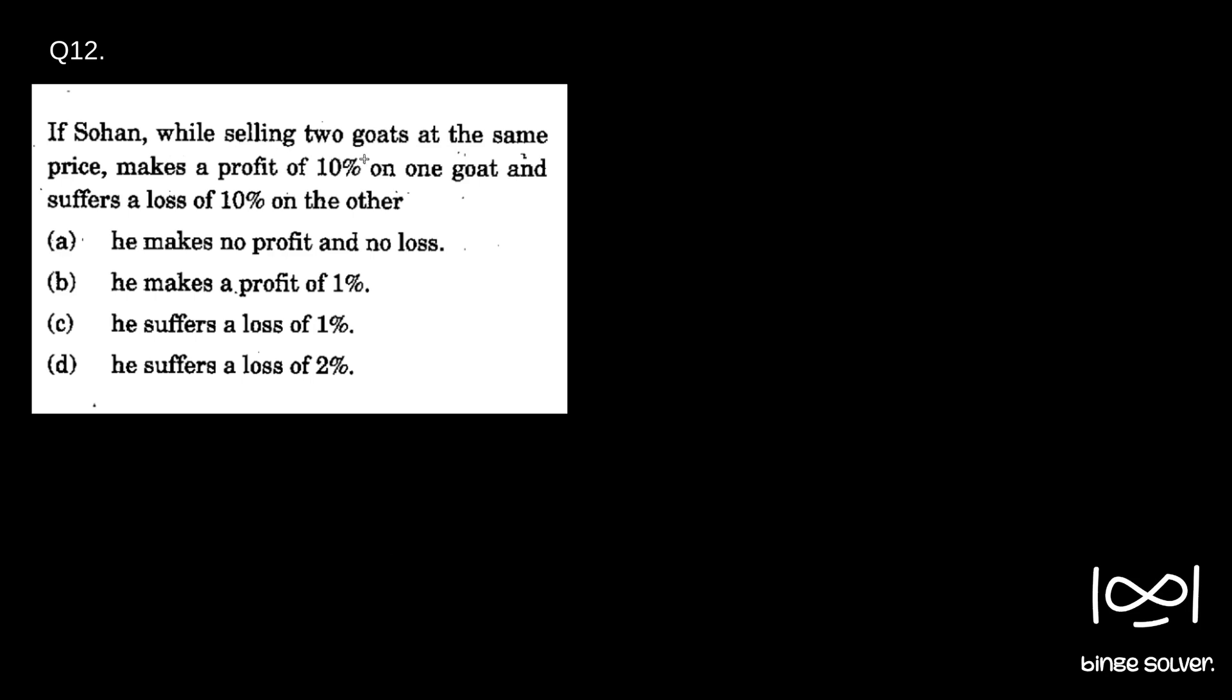You shouldn't miss out this point: he is selling two goats at the same price. So if he is selling two goats at the same price and making profit on one and loss on the other, that means the original price of the goat was different for both the goats.